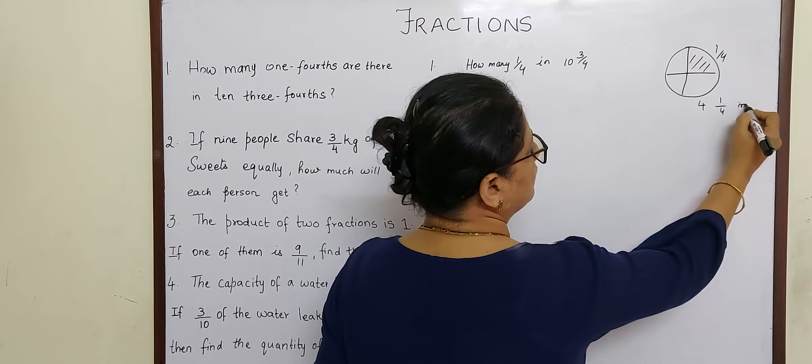So x into one-fourth is equal to fifteen-halves. When one-fourth from the left-hand side goes to the right-hand side, it becomes its reciprocal, four-by-one. So x is equal to fifteen multiplied by four-by-one, which gives us x equals thirty. So there are thirty one-fourths in ten three-fourths.